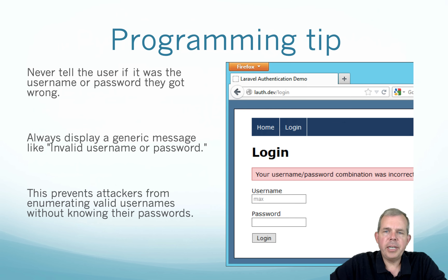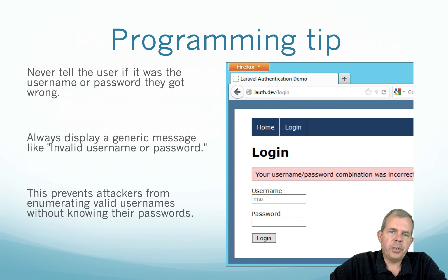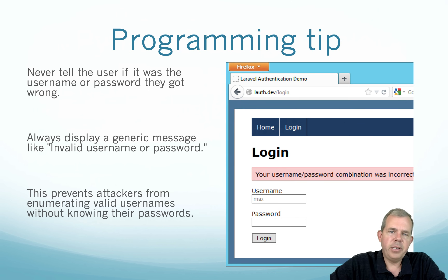Here's a programming tip: if you're building an application and verifying whether the user typed in the correct password and login name, don't tell them which one failed. Just tell them that one or the other failed. If you tell them they got the right password but the wrong username, that's a great way for them to discover who that username belongs to — and vice versa. If they got the right username, all they have to do is guess the other half. Tell them one or the other failed, but never which one.